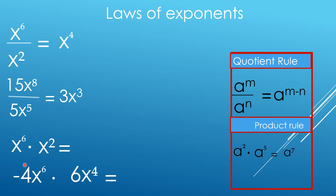And here we are multiplying, so copy the base and add the exponent — that is X raised to the eighth power. Here, multiplication again: multiply first the numerical coefficient, so negative 4 times 6, that is negative 24, then add the exponent, copy the base X, raised to 10. So negative 24X to the tenth power.